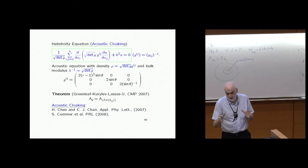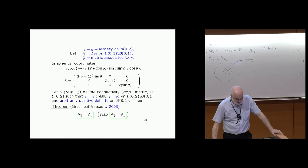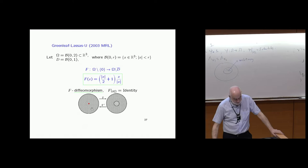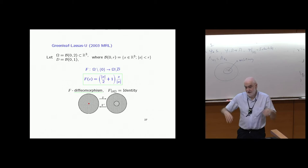This transformation is singular at zero — it's a diffeomorphism away from zero, blowing up a point to a circle. The singularity has to be there because a point cannot be the same as a ball via a smooth non-singular map.